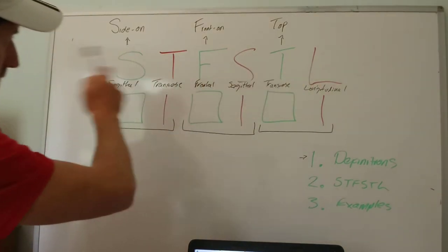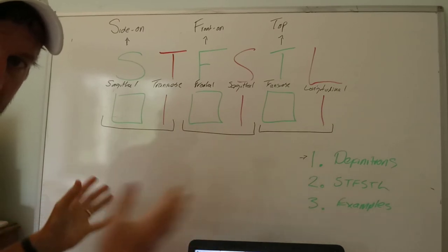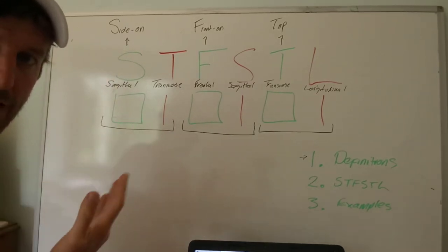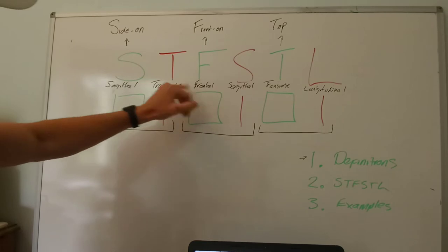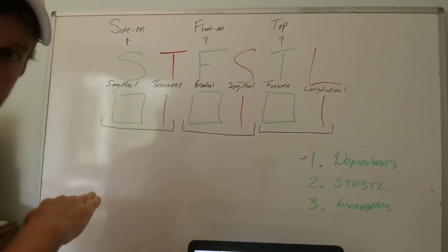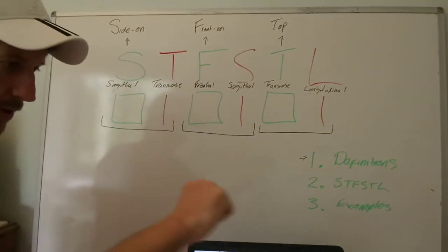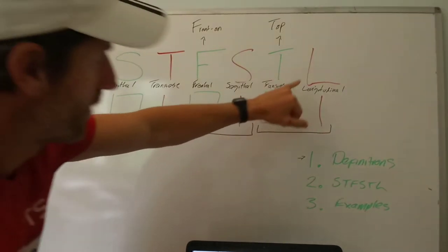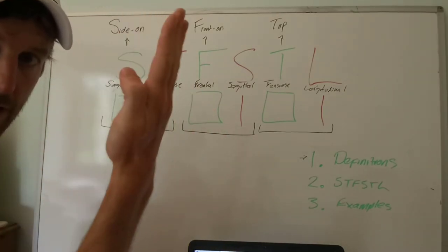This is very important. When it comes to your revision card after this session, write down the definition for each. A sagittal plane divides the body into left and right parts. The frontal plane divides the body into front and back parts. The transverse plane divides the body into top and bottom parts. The transverse axis goes through the body horizontally from left to right. The sagittal axis goes through the body horizontally from front to back. And the longitudinal axis goes vertically through the body from head to feet — that one looks at rotations.